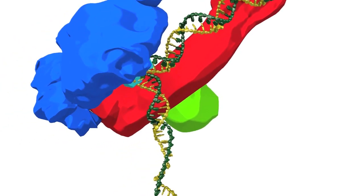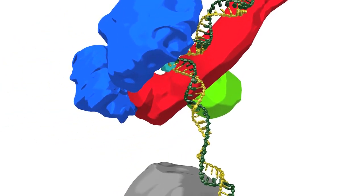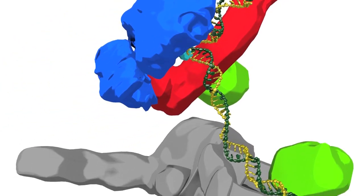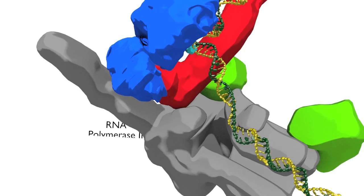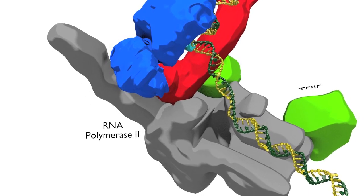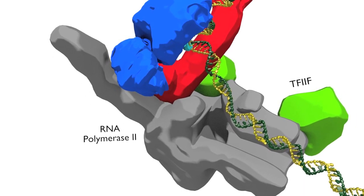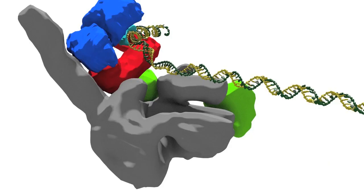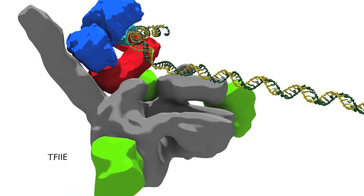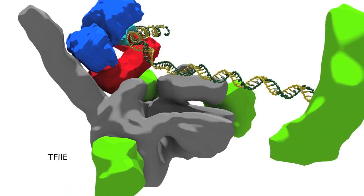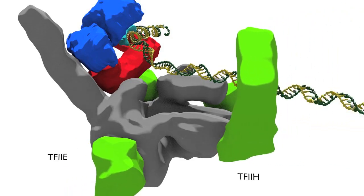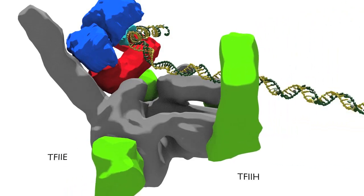In the next step, the RNA polymerase II core enzyme is recruited together with TF2F. Finally, TF2E and TF2H are recruited to form the complete transcription initiation complex.